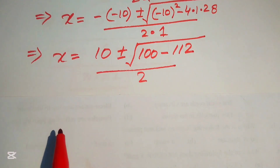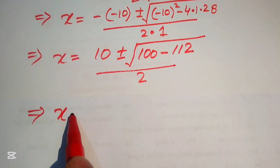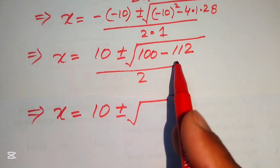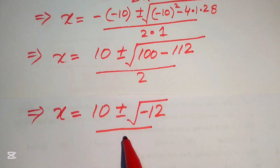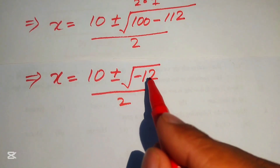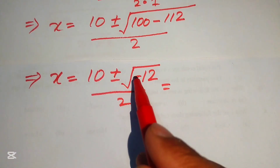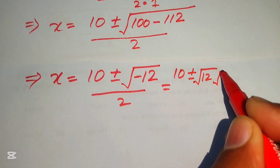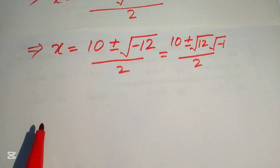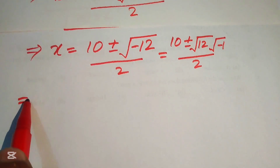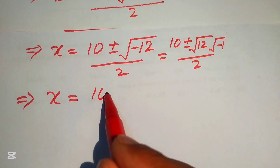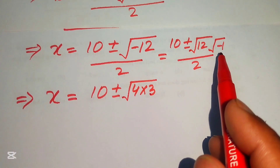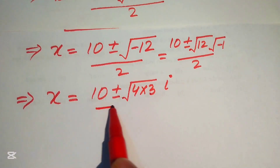We have 100 - 112 = -12, so x = (10 ± √(-12)) / 2. We separate the square root of the negative: √(-12) = √12 · √(-1) = √(4·3) · i = 2√3 · i.